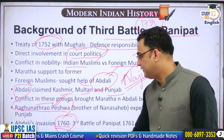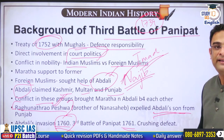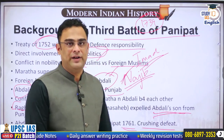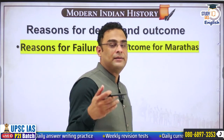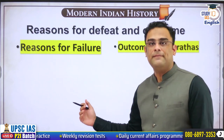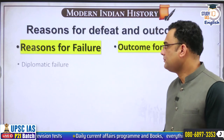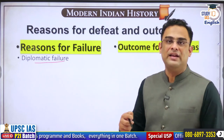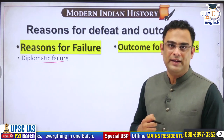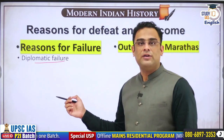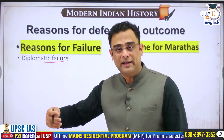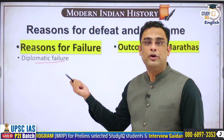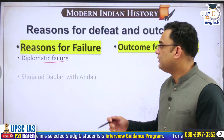Let us understand why the Marathas lost this battle. Reason number one: diplomatic failure. The Marathas were not able to stitch a strong alliance in North India to fight with them against this foreign invasion. The Maratha campaign had started almost a year before the battle, and through this entire process they could not muster the support of other local rulers. Shujaat Dola, the Nawab of Awadh, kept vacillating — calculating which side to support — and ultimately sided with Ahmed Shah Abdali, which was a very decisive factor in Abdali's favour as Shujaat Dola was a powerful person with a lot of resources.